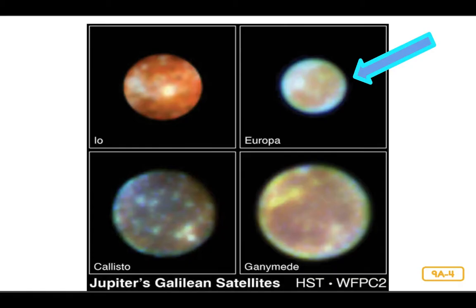Europa's surface is covered in ice and its atmosphere contains a lot of oxygen. Many astronomers believe that beneath Europa's ice there is an ocean of liquid water. This means that maybe, just maybe, there is some form of life on this distant little moon. So far, the only place in the solar system we know has life is our own planet Earth.